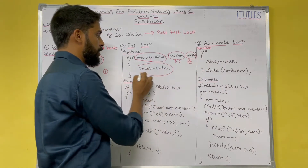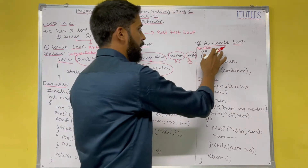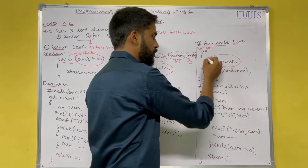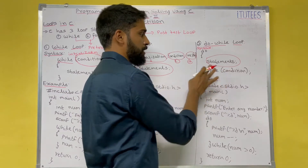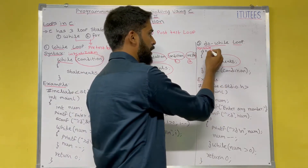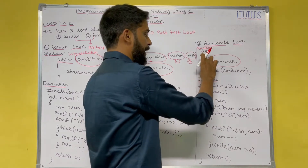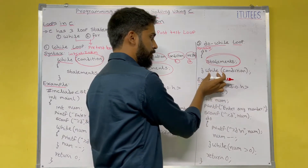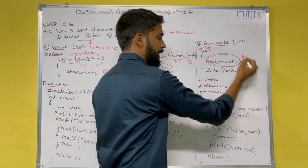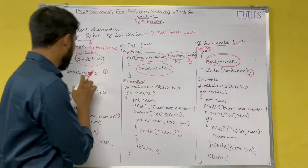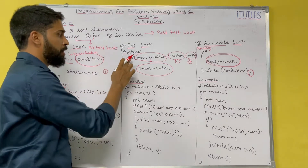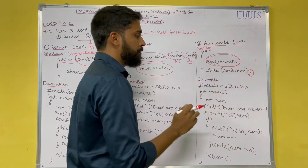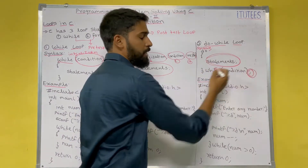The post-test loop is the do-while loop. First you execute the statements, then you check the condition. The syntax is: write 'do', then an open bracket, write the statements inside, then close bracket, write 'while', then the condition, and a semicolon. Note that while and for loops have no semicolon, but do-while requires a semicolon at the end of the while condition.